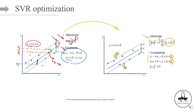The slack variables allow regression errors to exist up to the value of Xi and Xi star, yet still satisfy the required condition. This optimization problem is very analogous to the SVC soft margin. The tuning parameter C — our hyperparameter — does the exact same job: it balances the tradeoff between bias and variance. Specifically, if C is large, the model does not allow much slack, the slack should be smaller, and the model becomes more flexible — giving smaller bias but larger variance.